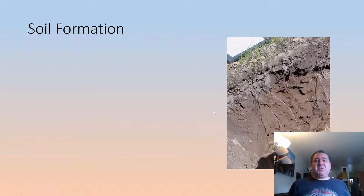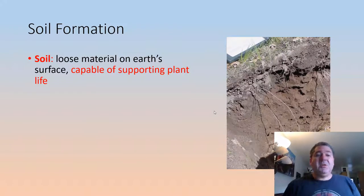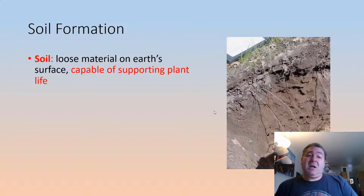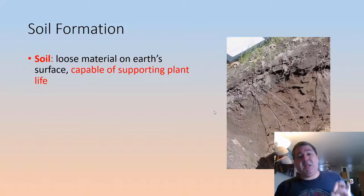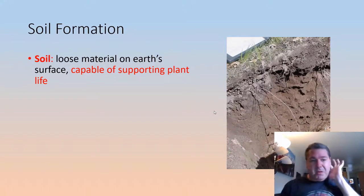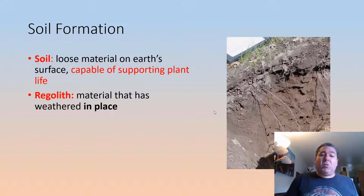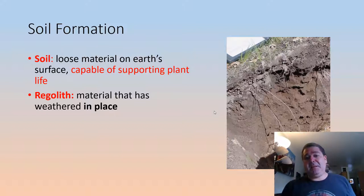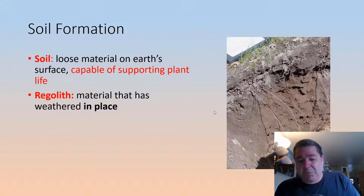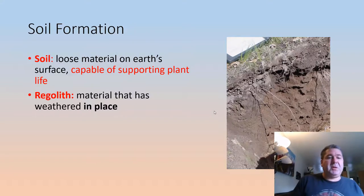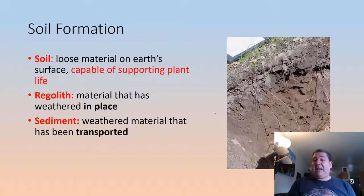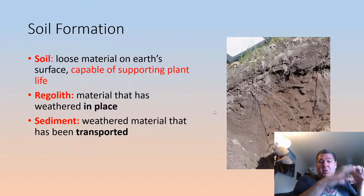When we look at soils, a few things need to be defined. Soil is any loose material on Earth's surface capable of supporting plant life — that's a very important distinction. Regolith, on the other hand, is material that has weathered in place but doesn't necessarily support life. Sediment is weathered material that has been eroded, transported, and redeposited.